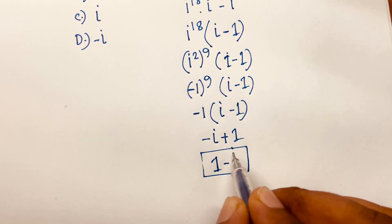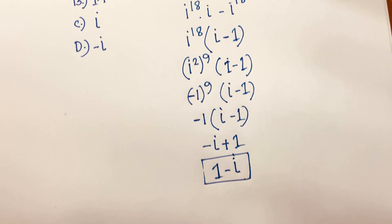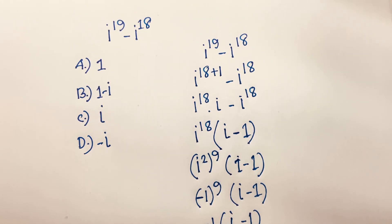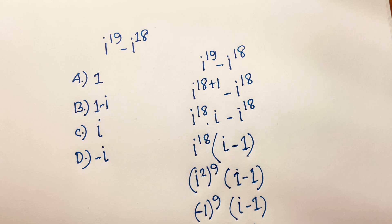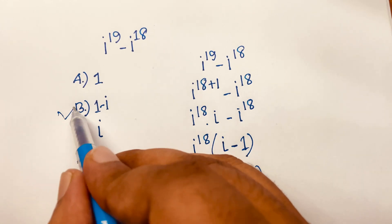So the final answer is 1 minus i, and option B is our right answer.